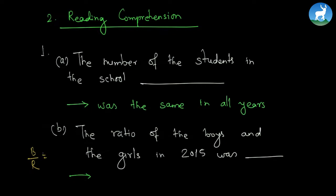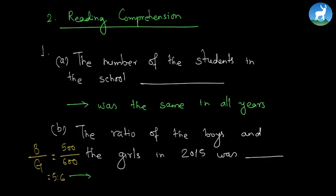Another question is: what was the ratio of boys and girls in 2015? For this question you need to do a little math. Go to the 2015 section and find out the ratio of boys to girls. The number of boys is 500 while the number of girls is 600.